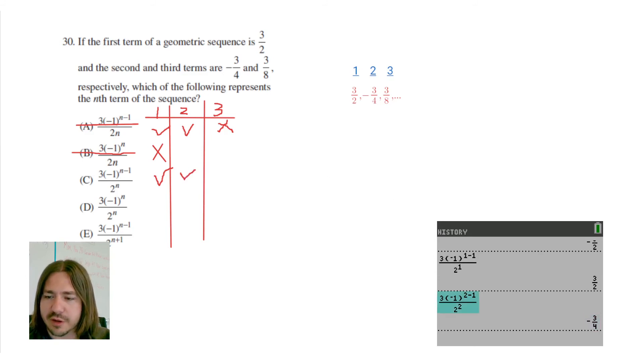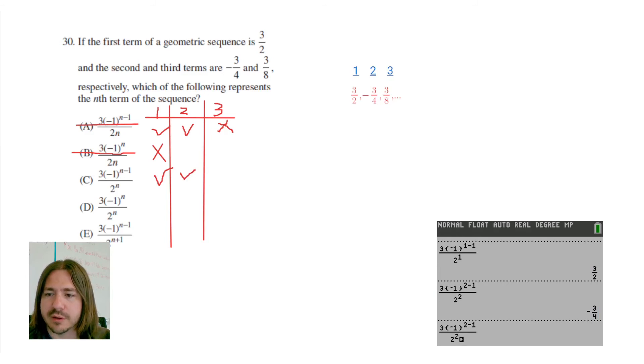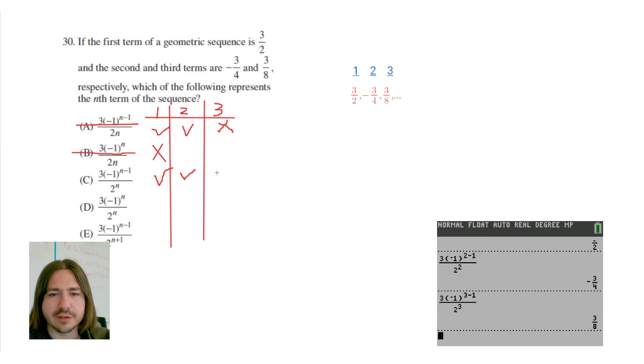We're going to type in 3 here now for n. And we get 3 eighths. Look at that. So now we know the answer choice. The correct answer here is C.